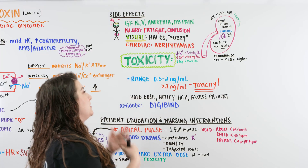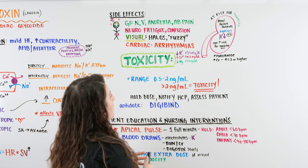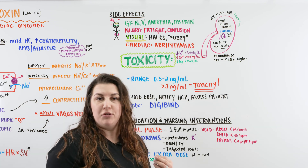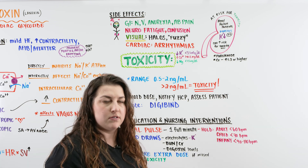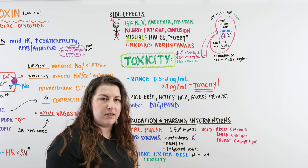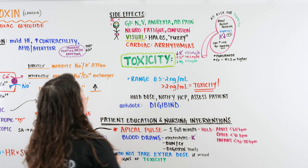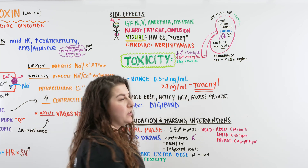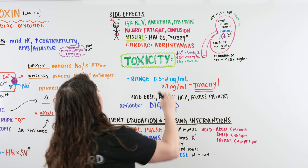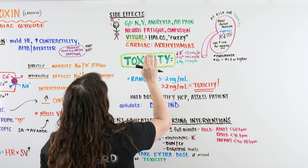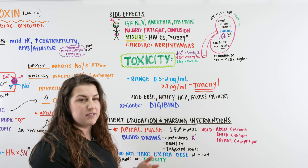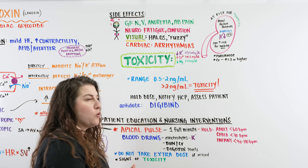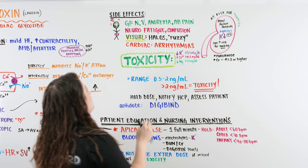When we give our patient Digoxin, the side effects we look for that could indicate toxicity include GI issues like nausea, vomiting, anorexia, or abdominal pain. We're also looking at neuro effects — particularly fatigue or confusion — altered mental status, or being more tired than normal could be an indication of a neuro effect from Digoxin toxicity.